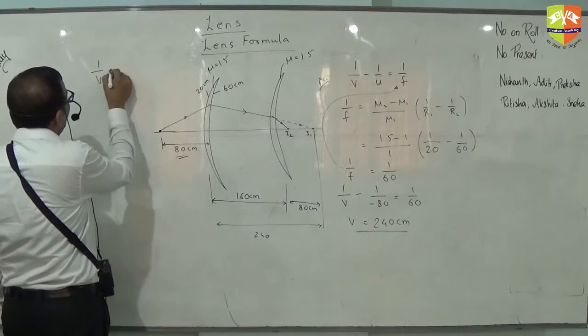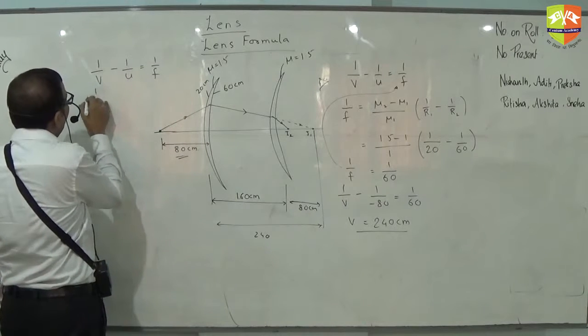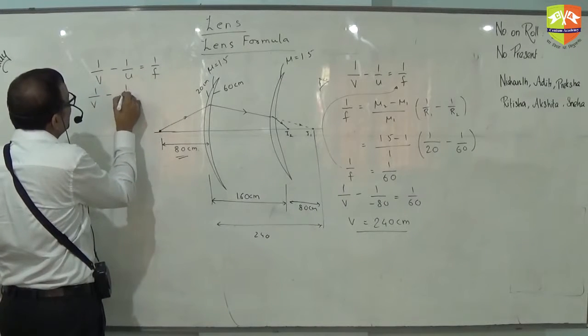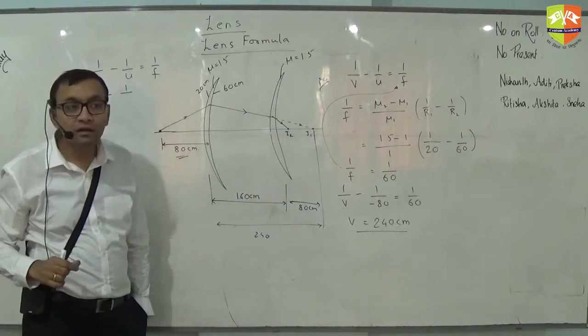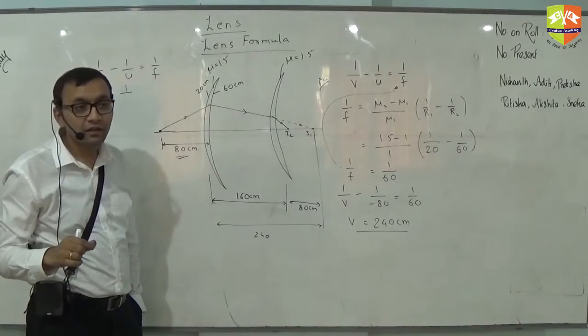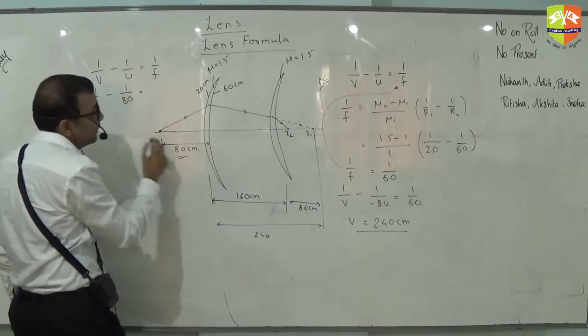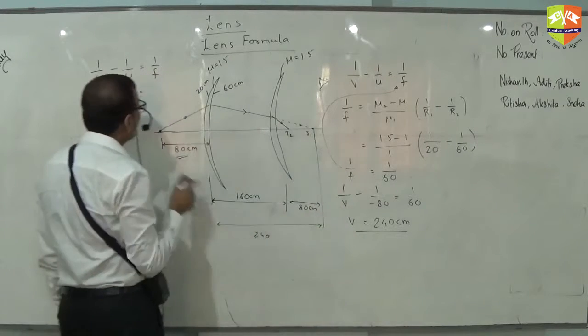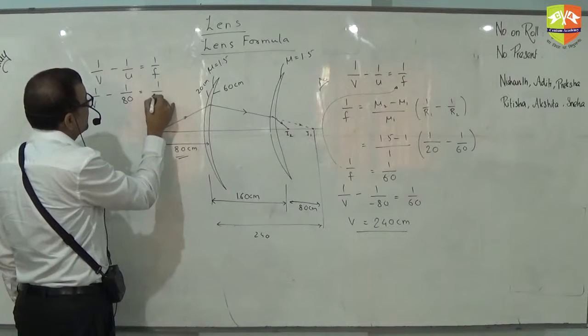Lens formula is what? 1/v minus 1/u equals 1/f. Now v is what we need to find out. What is u? U is what for this? 80. 80. Or minus 80? Plus 80. So this is plus 80. Why? Because object is on that side. F is what? 60. F is 60.